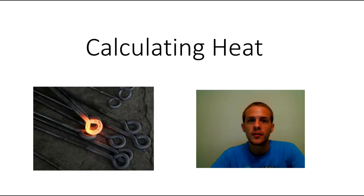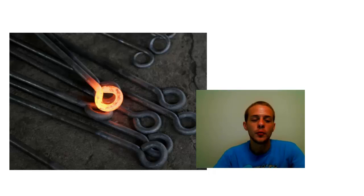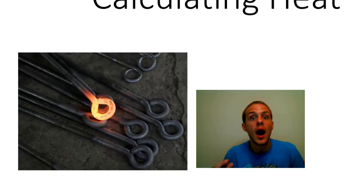So in this image here we have this metal loop that is so hot and has absorbed so much heat that it's actually glowing. And if we know a couple of other things about that metal we can actually calculate how many joules of heat must have gone into that metal to get it so hot.